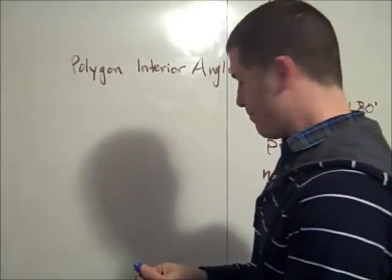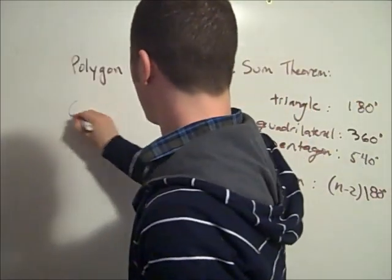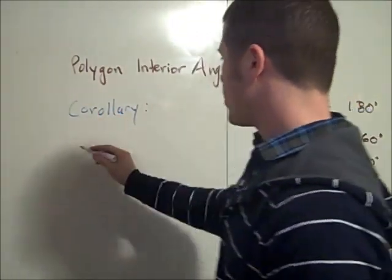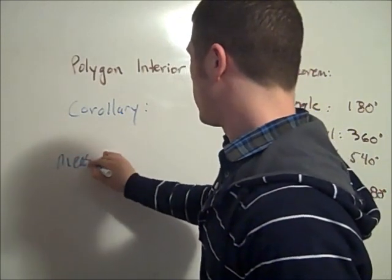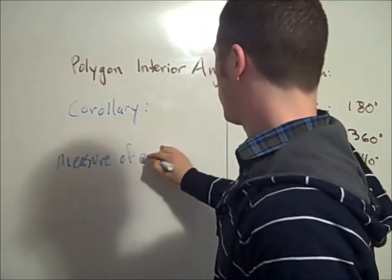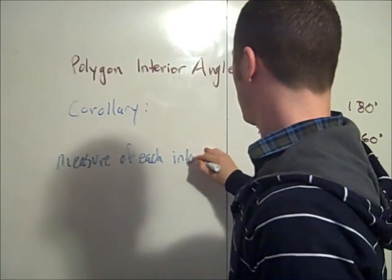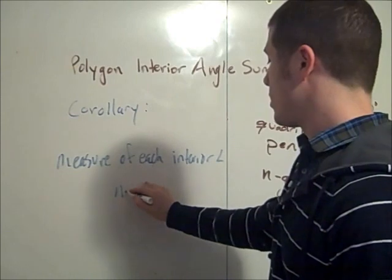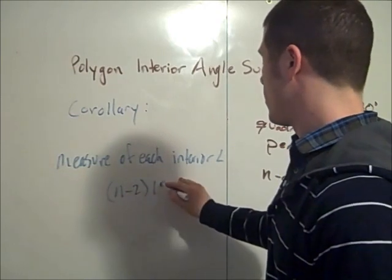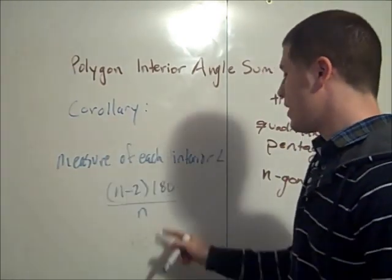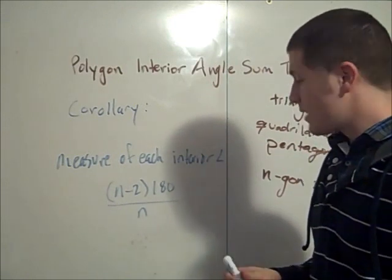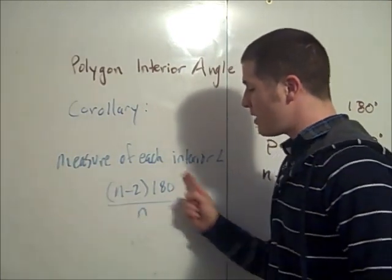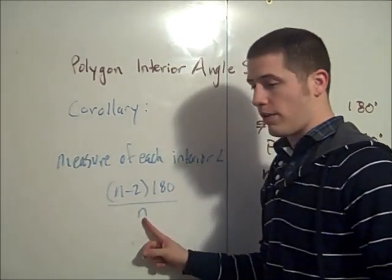So this is called the corollary. The corollary says that the measure of each interior angle is the sum of all of the angles — (n − 2) times 180 — divided by the number of angles there are, namely n. So now you can find the measure of each interior angle by finding the sum of all of the interior angles and then dividing by the number of angles that there are.